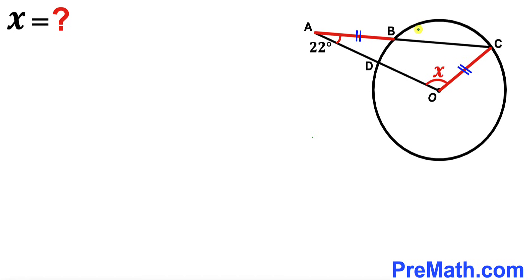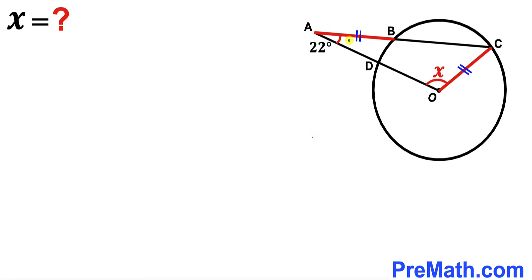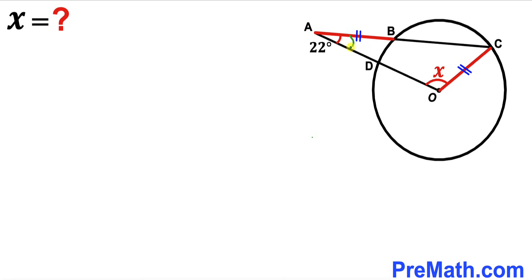Welcome to PreMath. In this video we have a circle with center O and triangle AOC, as seen in the diagram. Segment AB length equals radius OC length. Angle DAB is 22 degrees, and angle COD is represented by X. Our task is to find the value of angle X.